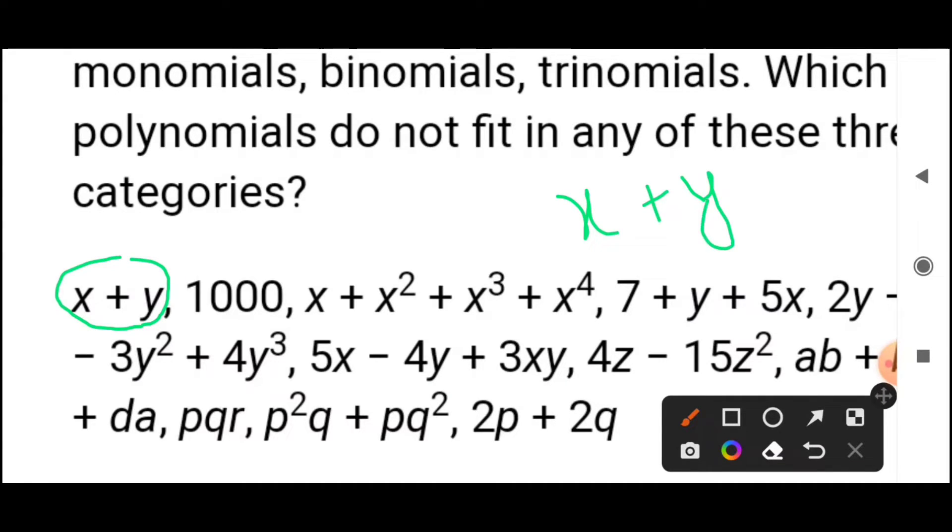How many terms are there? There are two terms. The first is x, the second is plus y. Where an expression has two terms, that is known as binomial.